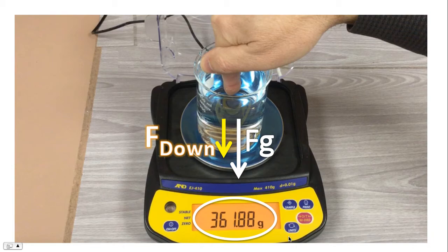And so, in effect, when you push down on the water, you're displacing the water, and that causes the scale to record a greater mass. A greater mass because there's two forces acting downwards, not just one force.